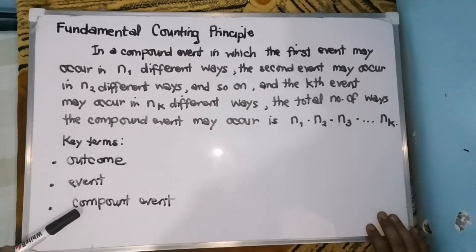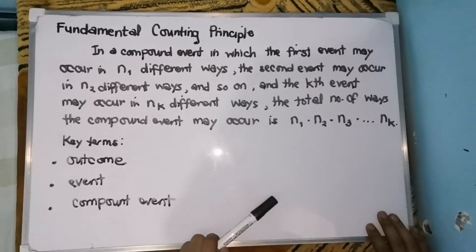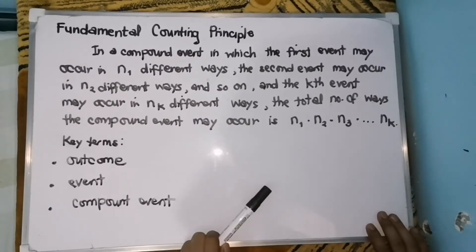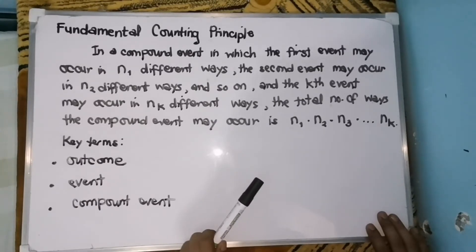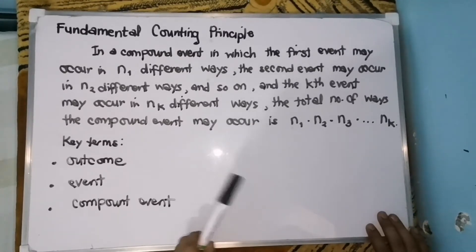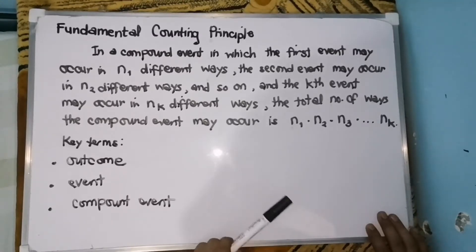To give you background on the fundamental counting principle, these are the possible ways or combinations you can use. For example, if you're into fashion and you don't want to repeat your outfits, you can mix and match. So if you have five t-shirts, five pants, and three shoes, there are many ways you can put together an outfit — and that is what we will be learning today with the fundamental counting principle.